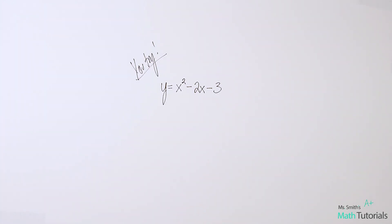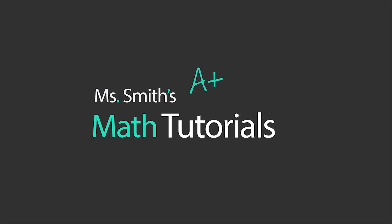Here's one for you guys to try. This is y equals x squared minus 2x minus 3. I want you to convert this from standard form to vertex form. Remember, your first step is you want to actually find the vertex and then go from there. I will post the answer in the video description below. This has been Ms. Smith's Math Tutorials.